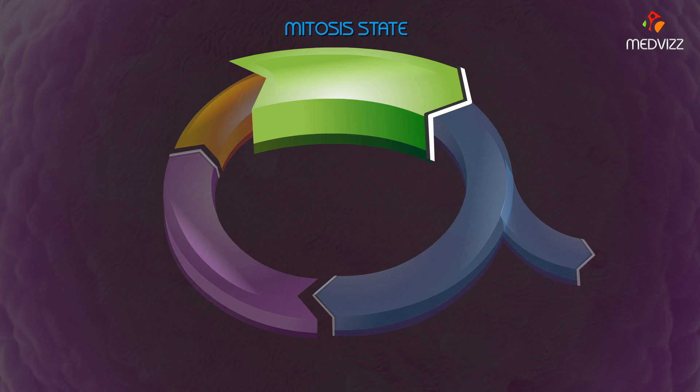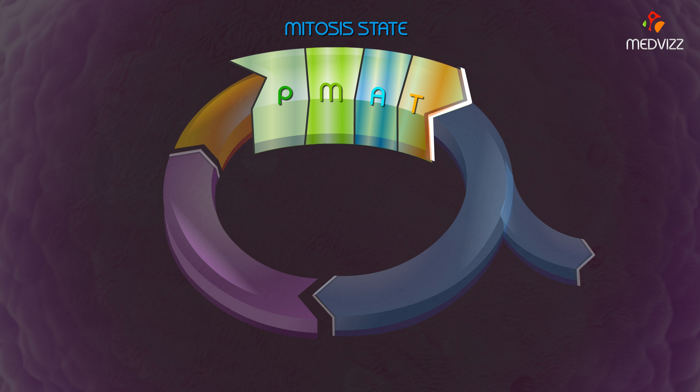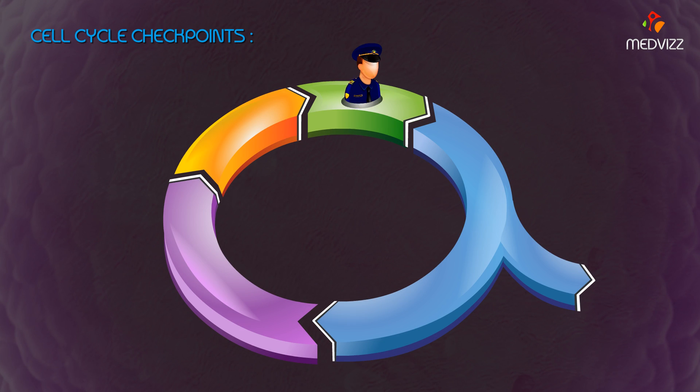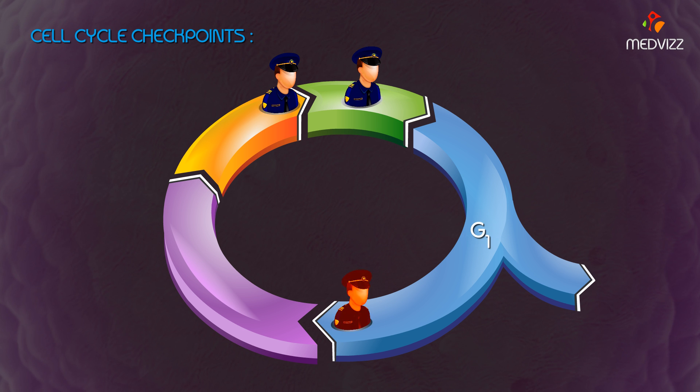Prophase, metaphase, anaphase, and telophase occur during the M phase. The three major cell cycle checkpoints are at the end of G1, the end of G2, and during metaphase of the M phase.